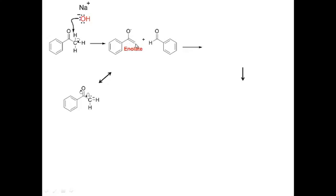Enolate: 'en' for the double bond, and 'ol' for the oxygen here, which could be interpreted as an OH group — so it's an enol. If you remember from part one, we talked about enol tautomerism. The enolate is a nucleophile; it's the carbon in the enolate — this carbon right here — that is the nucleophilic site that's going to attack the carbonyl of the aldehyde.